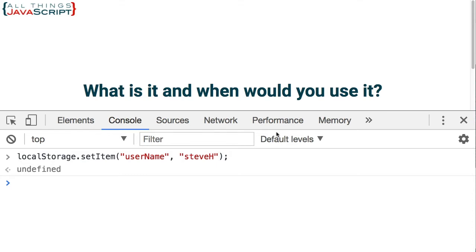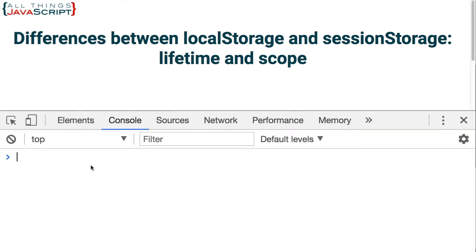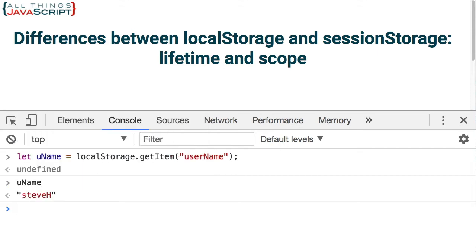Now I am going to close this HTML page and I have another HTML page open here. I am going to open up the console again and retrieve that information. This time we use get item to retrieve it, and what we pass in is simply the identifier we had given the information previously. Now if we display uname, we can see that it contains Steve H, the username that I put in initially. And that persisted across two different HTML pages.